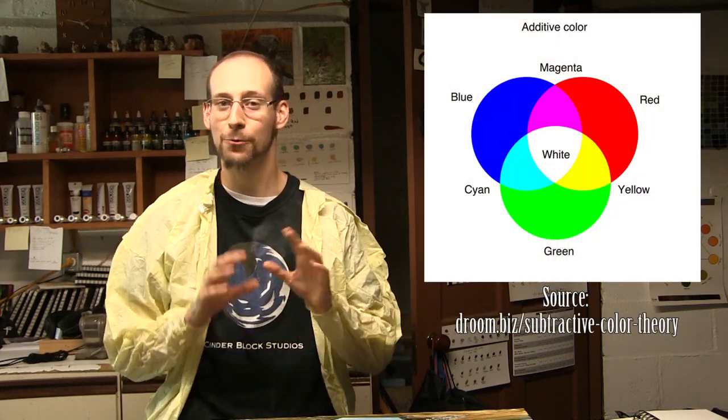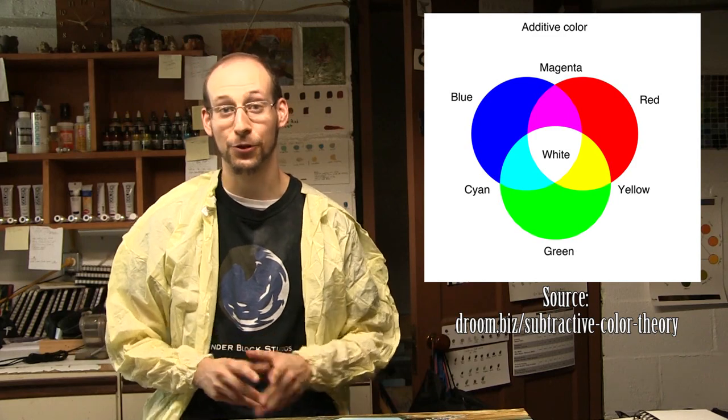In terms of how color actually works, there are two types of color: additive and subtractive color. Additive color is how light works. You have basically three primary colors of light: red, blue, and green, and when you mix these three colors of light together, you get white.